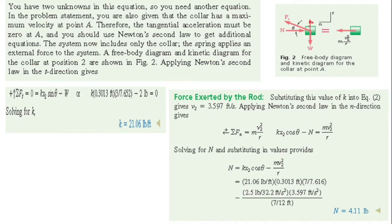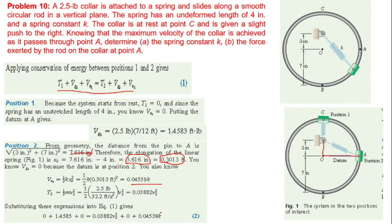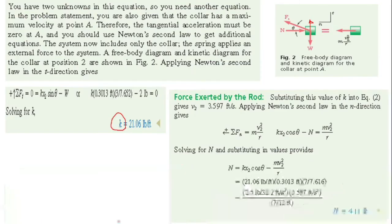Substituting values and accounting for the downward direction with a minus sign for weight W, we can solve to find the value of spring constant k. With k known, we substitute back into the energy equation to find the velocity v₂ at point A.